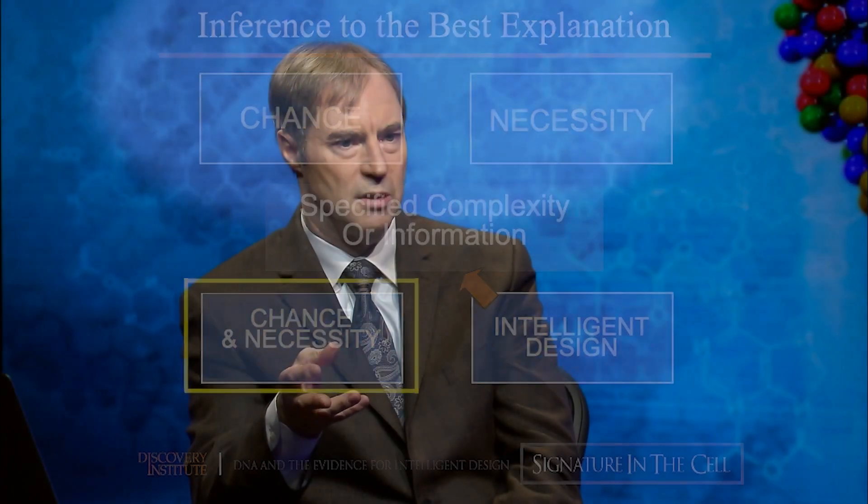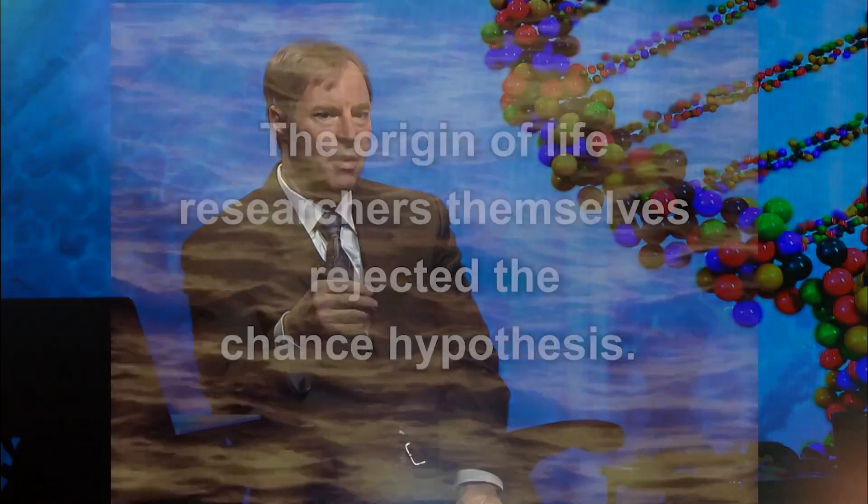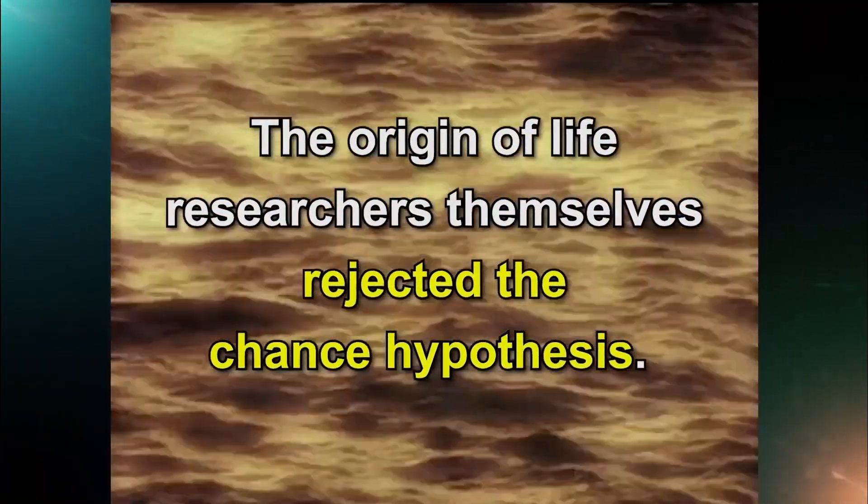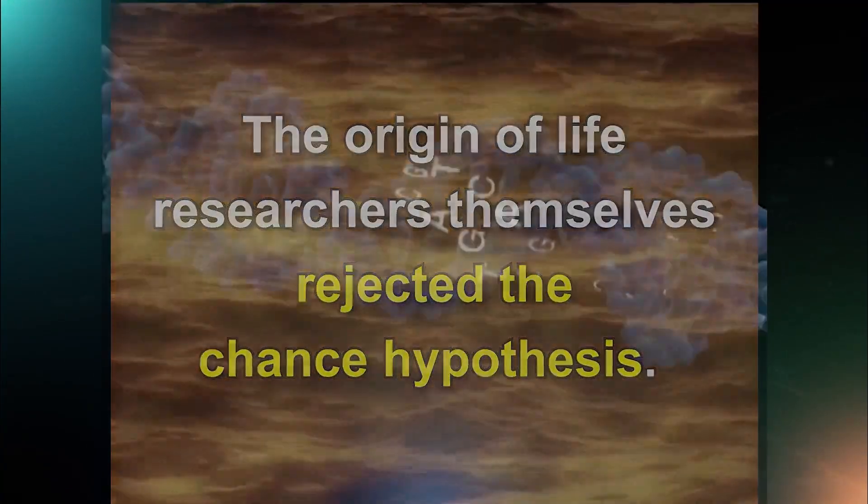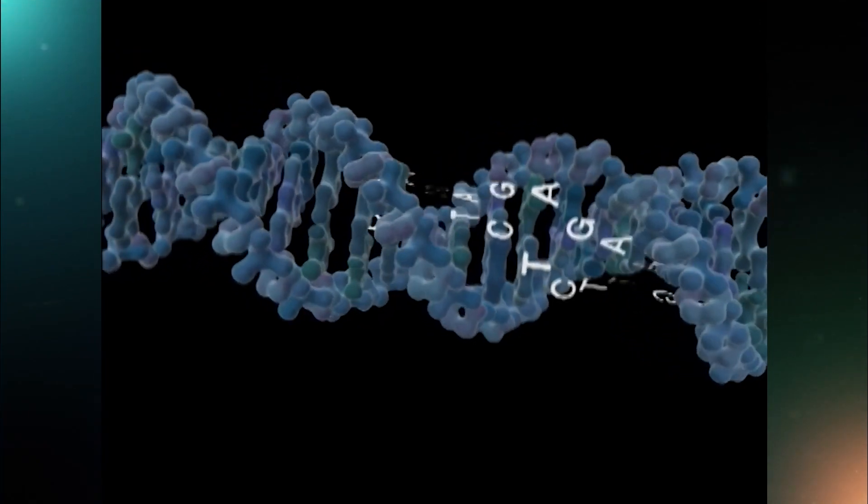The first approach taken by origin of life researchers in the 1950s, as they began to appreciate the complexity of the cell and the information-bearing properties of DNA, was the brute chance approach. The idea was that you have a bunch of chemicals floating around in a prebiotic ocean or prebiotic soup, and they start knocking into each other and binding to one another, and eventually you get a DNA molecule with all the information for building proteins. But when people started doing the calculations on exactly how likely something like that would be, they realized this wasn't plausible at all. The origin of life researchers themselves rejected chance within a very few years. There was just too much information, and that made the formation of a functional DNA molecule too improbable, even taking into account the billions of years we've had in the history of the universe.